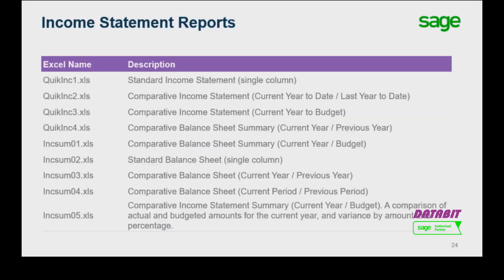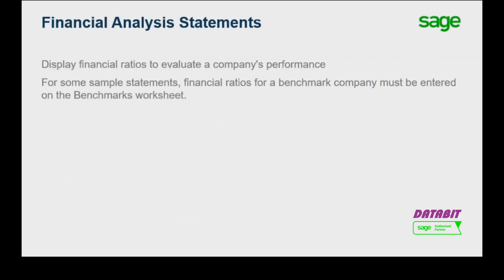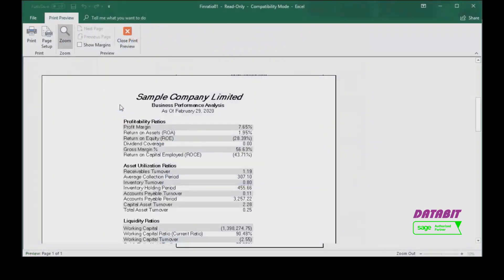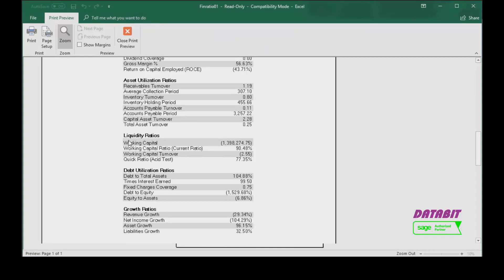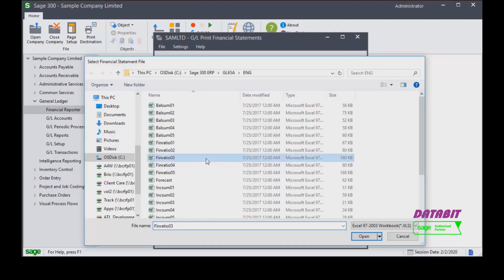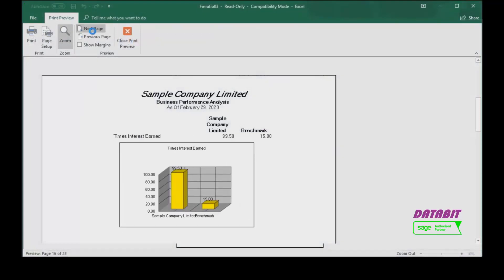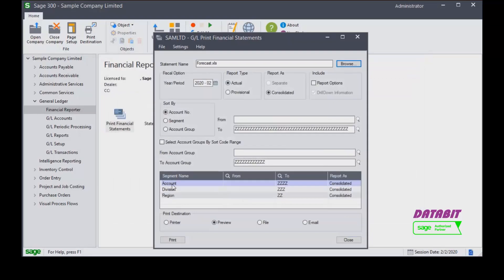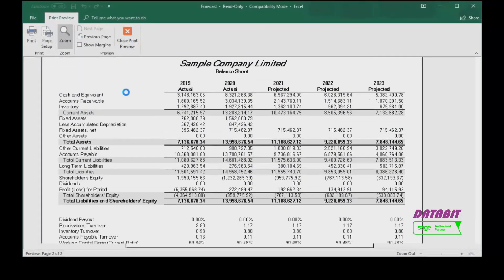Financial analysis statements display financial ratios used by financial managers to evaluate a company's performance. For some of the following statements, you must enter financial ratios for a benchmark company — an average company in your industry — on the benchmarks worksheet. Sample financial analysis statements include a summary of the financial ratios for the current period grouped into the following categories: profitability, asset utilization, liquidity, debt utilization, and growth; a graph comparing the company's financial ratios to the benchmark; and financial forecasts that assess current operating performance and project how your business will perform in the future.